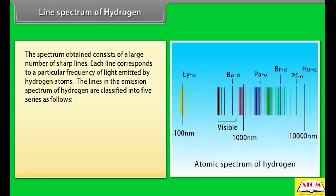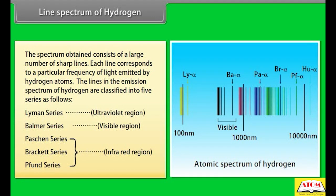The spectrum obtained consists of a large number of sharp lines, each corresponding to a particular frequency of light emitted by hydrogen atoms. The lines in the emission spectrum of hydrogen are classified into five series: Lyman series (ultraviolet region), Balmer series (visible region), Paschen series, Brackett series, and Pfund series (infrared region).